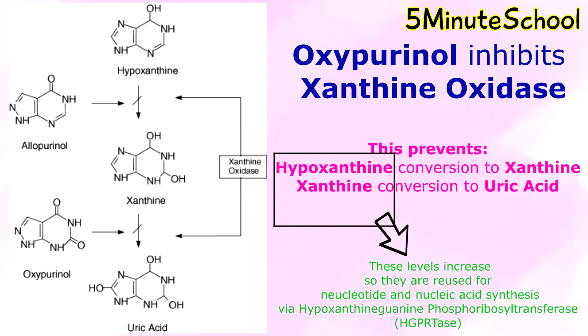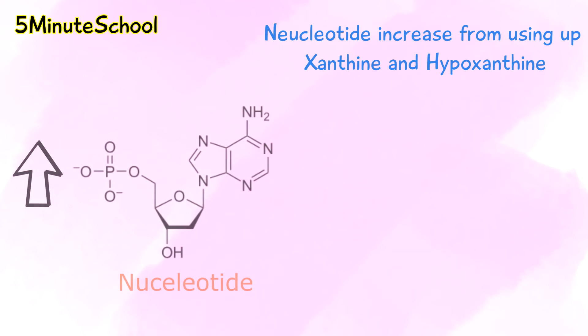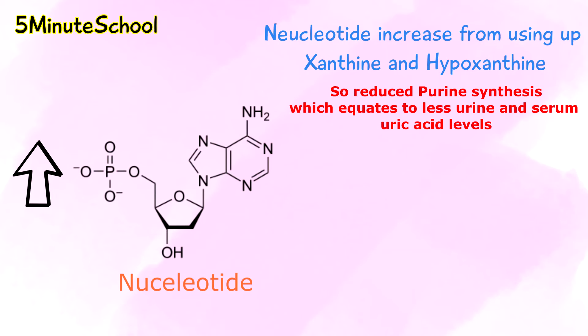Therefore, we have an increase in nucleotide concentration. Because of this nucleotide increase, we have a reduction in purine synthesis, which also helps to reduce urine and serum uric acid concentrations.